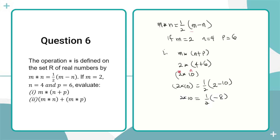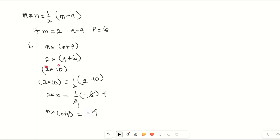So 2★10 = ½(−8) = −4. Therefore m★(n + p) = −4.